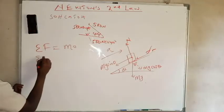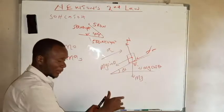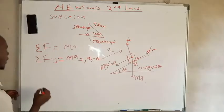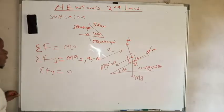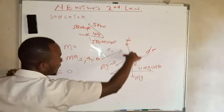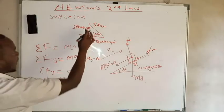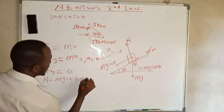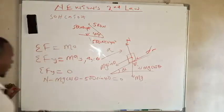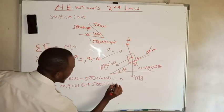The summation of forces in y equals m times ay. Since the block is not moving in the y direction, ay equals zero. So the summation of forces in y equals zero. In the y direction we have N upward, minus mg cosine theta, and minus 500 sine 40 degrees equals zero. Therefore N equals mg cosine theta plus 500 sine 40 degrees. This is equation number one.